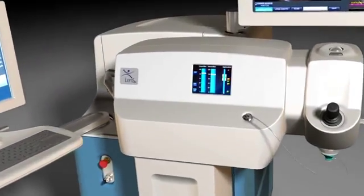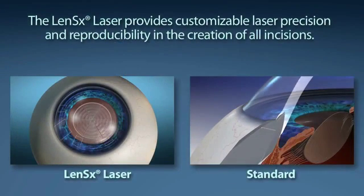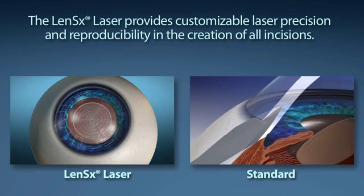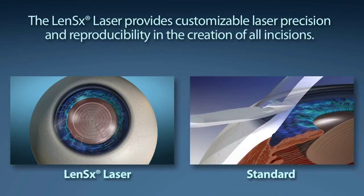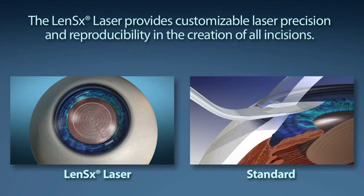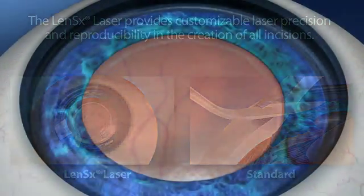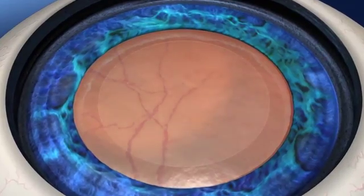Standard cataract surgery starts with the creation of an incision through the cornea utilizing a scalpel, in order to allow the surgeon access to the cataract. LensX provides customizable laser precision and reproducibility in the creation of the incision. Capsular axis is the medical term used to describe the removal of the outer layer of the lens in order to allow the surgeon access to removing the cataract.